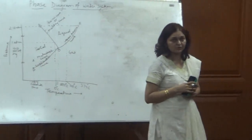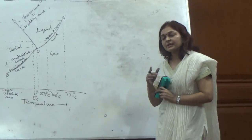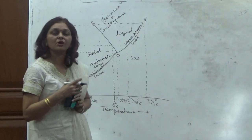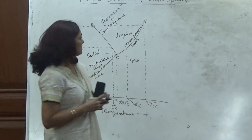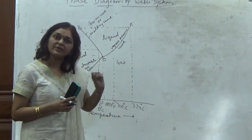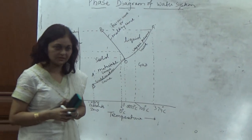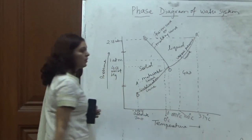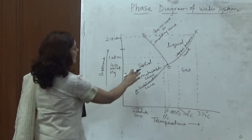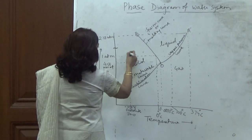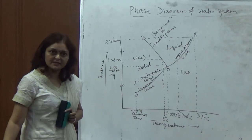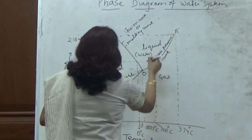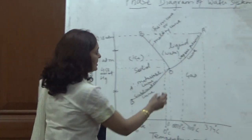Why degree of freedom? Because with the help of degree of freedom, we find the variables like pressure, temperature, or concentration on the basis of which different systems can be specified. In this phase diagram, we are showing the three phases of water. Water exists in the form of solid, which is ice; in the form of liquid, which is water; and the vapor phase, which is gas.